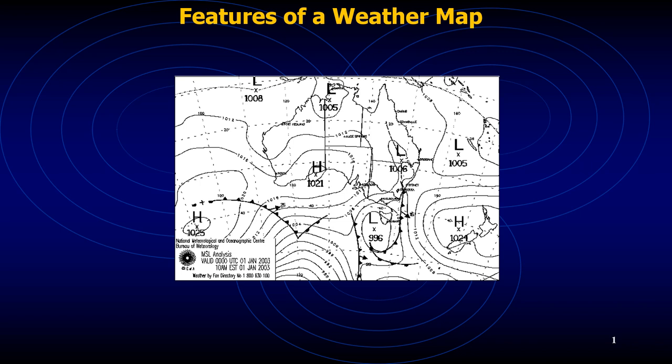I've taken the example of Australia, and you can see the outline of Australia on the weather fax. The first feature is the title and the issue date with the validity information. This example is from 2003; the date is given as the first of January with the UTC/GMT time as well as the Eastern Standard Time. The validity date is also provided. It's an MSL analysis — a mean sea level analysis — issued from the National Meteorological and Oceanographic Centre, Bureau of Meteorology.